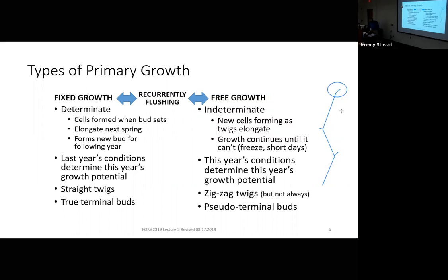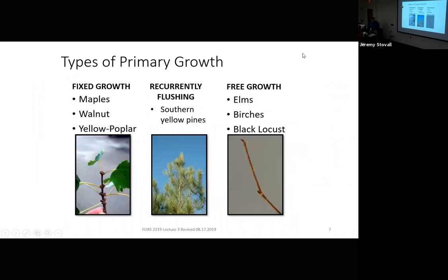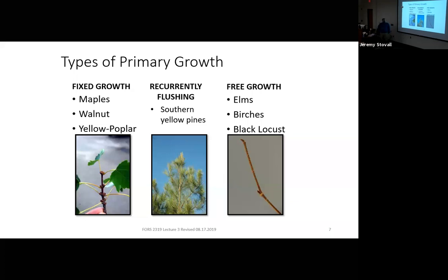You have one more form of growth that's intermediate between these two strategies, called recurrently flushing — basically a hybrid of the two. Fixed growth trees like red maple have a nice straight twig where the terminal buds look a little different from the lateral buds. That's also true of walnuts and yellow poplars, which we'll see in lab this week.